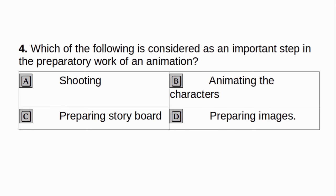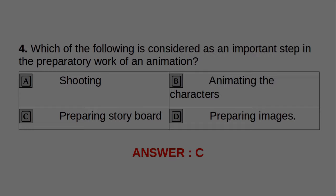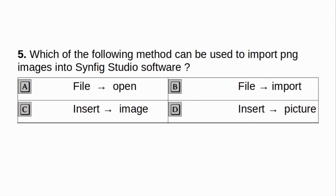Which of the following is considered as an important step in the preparatory work of an animation? A. Shooting. B. Animating the characters. C. Preparing storyboard. D. Preparing images. Answer: C. Preparing storyboard.